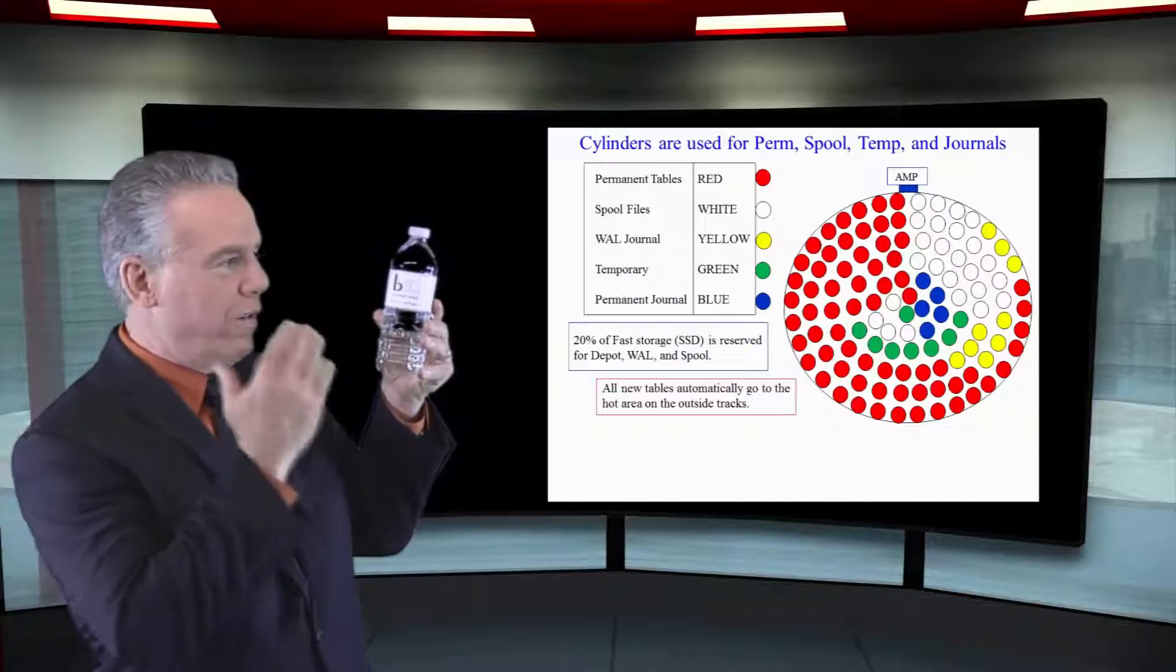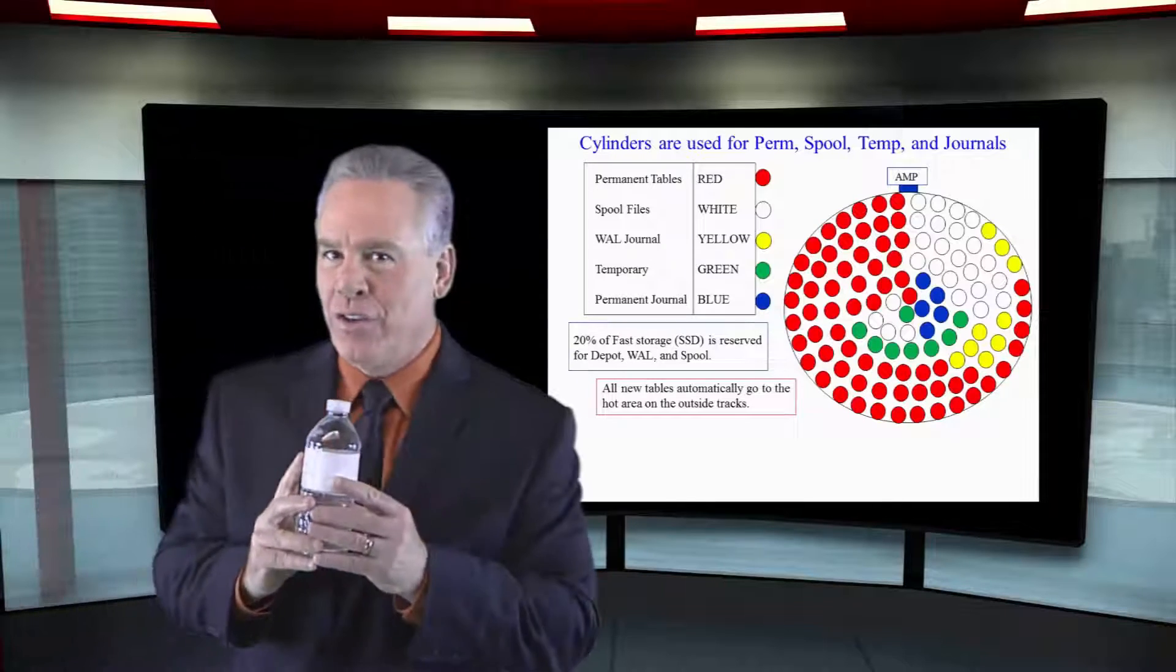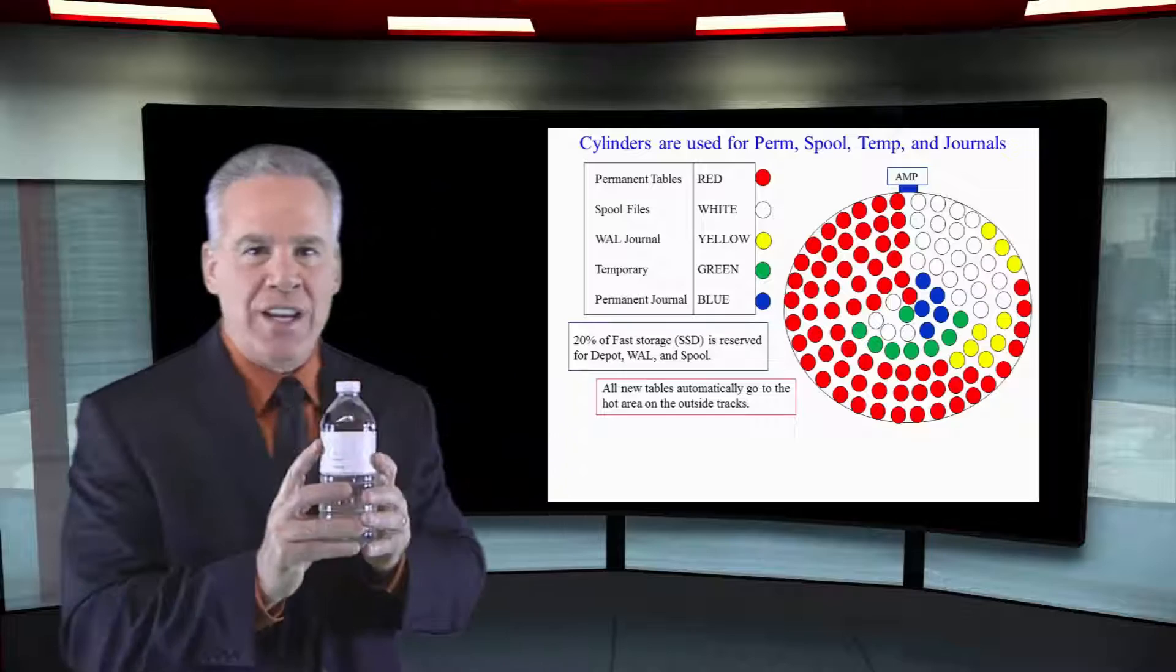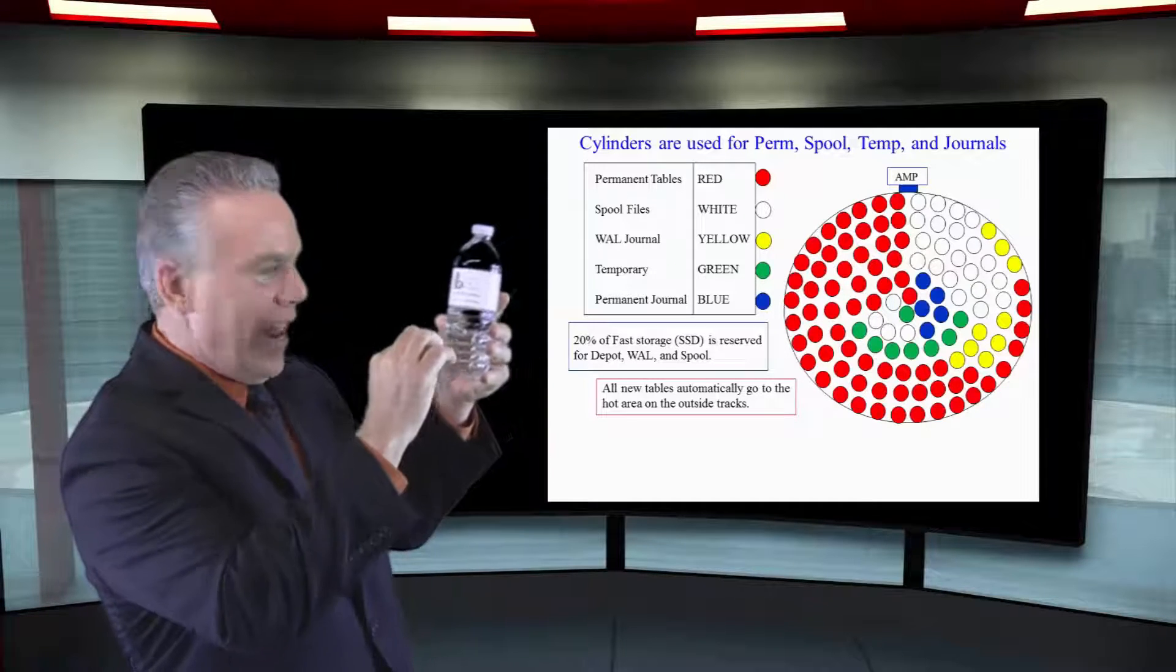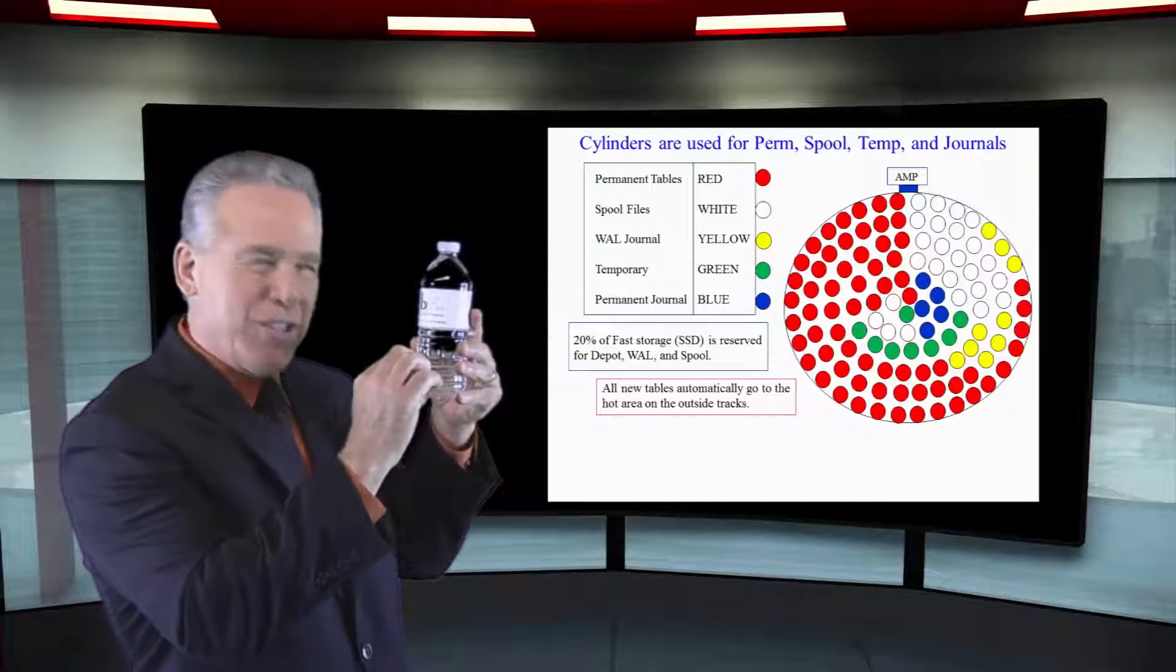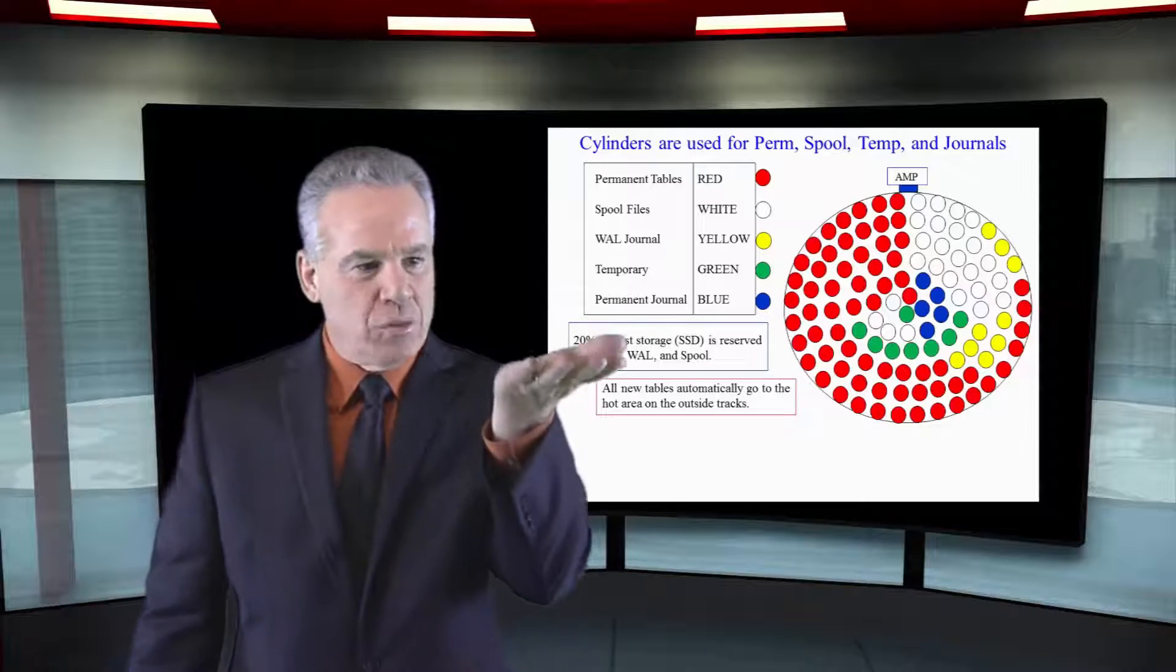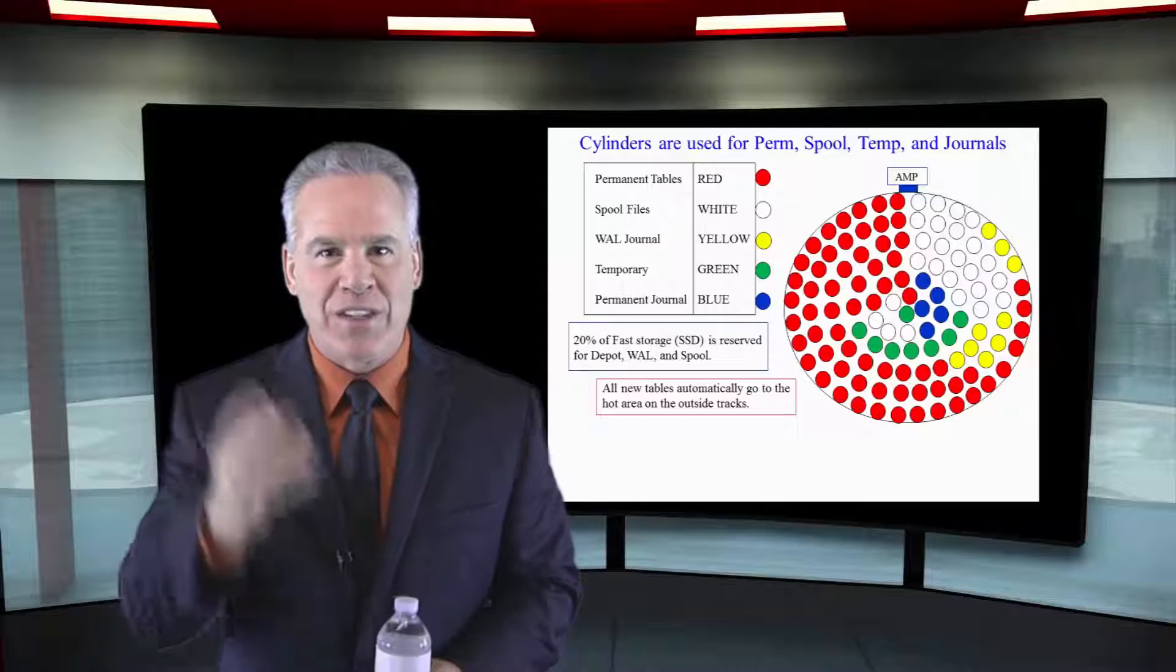There will be cylinders for permanent data and there will be other cylinders for spool data. And you will never see any cylinders that have some permanent data that are still empty used for spool. It doesn't work that way. Spool cylinders, permanent cylinders.